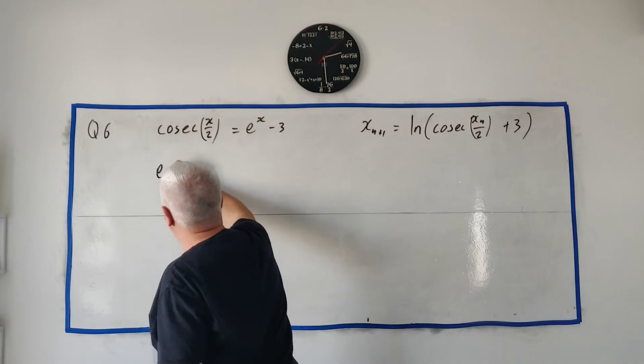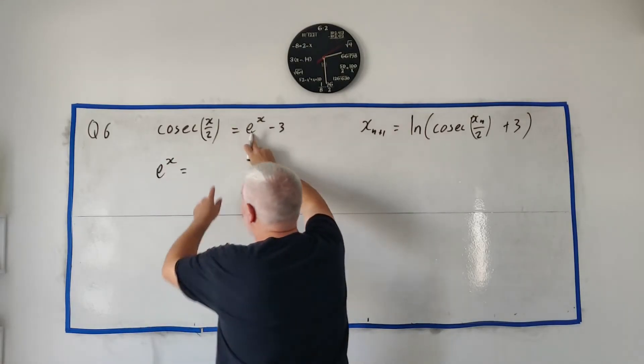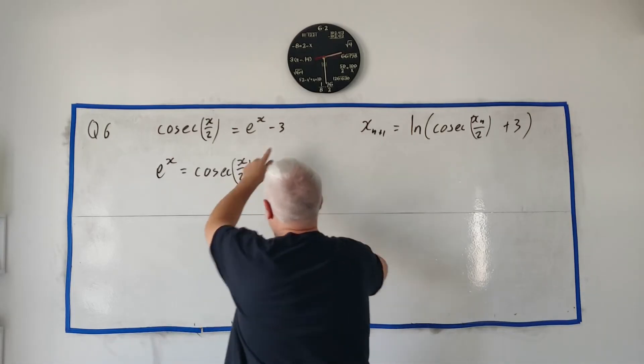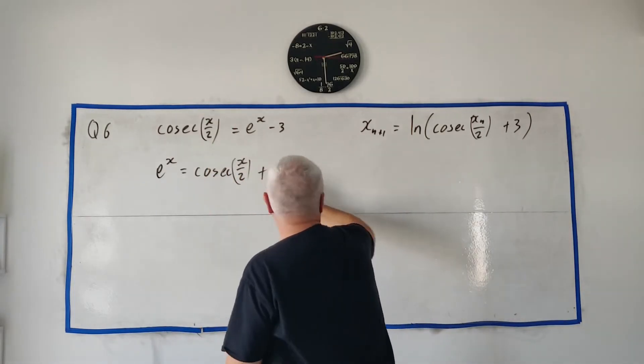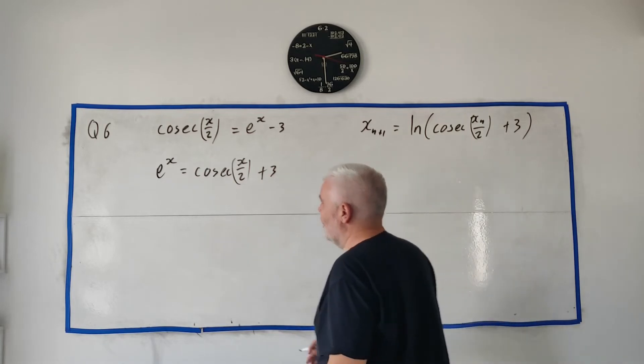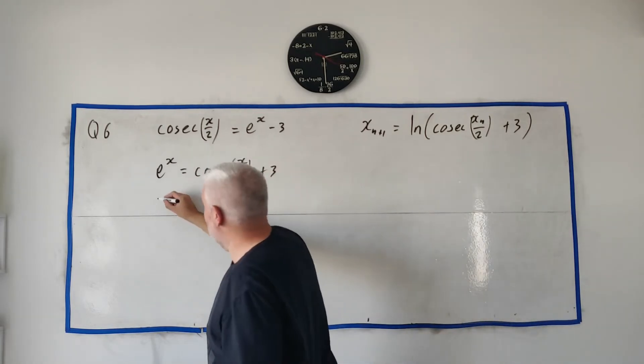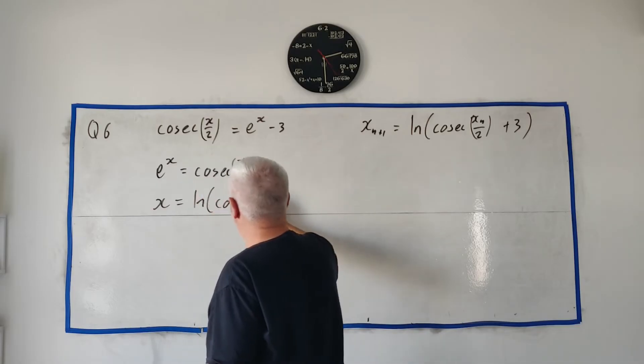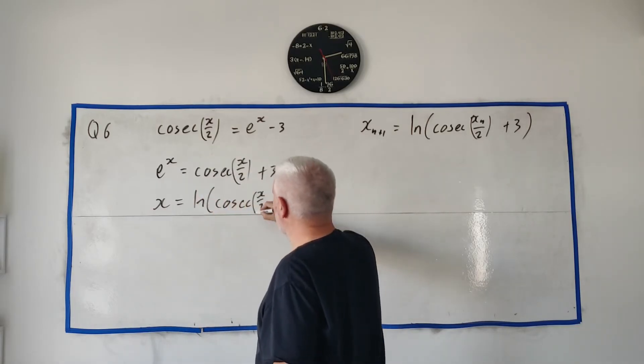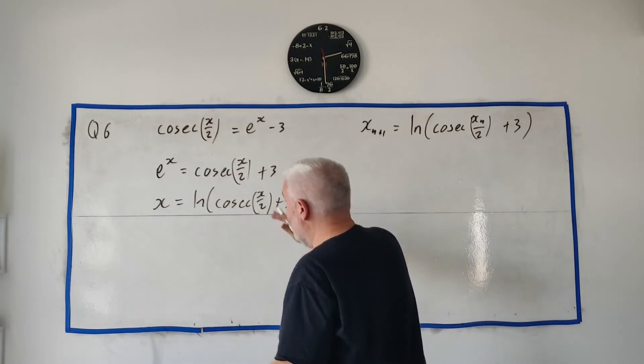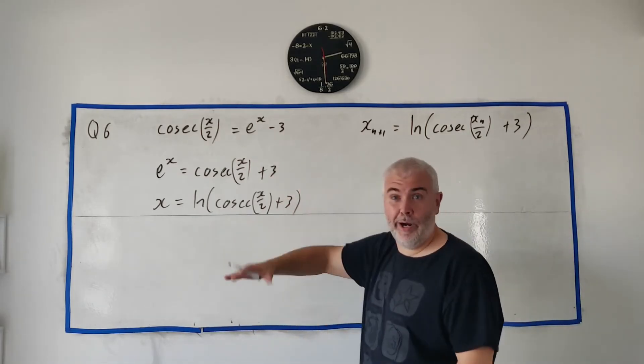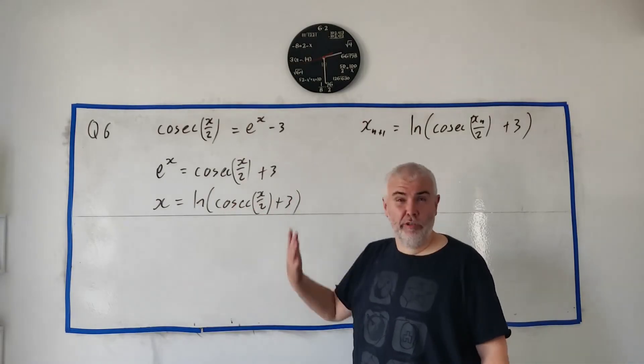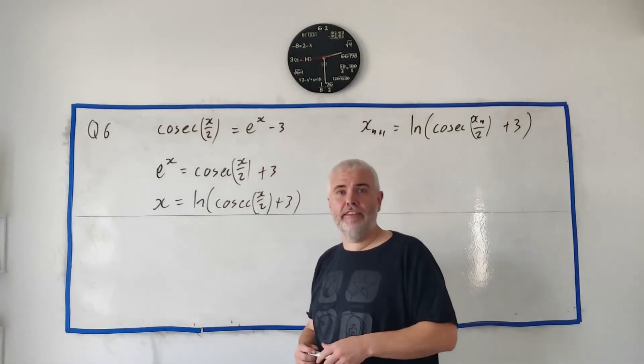Rearrange it here. So we have e to the x is equal this guy still, x over 2 and the 3 moves over plus 3. Already looking nearly identical. Take the natural log of both sides and we get x is equal natural log of cosec x over 2 plus 3. And that's it. That's it. It's only one mark. You're getting one mark from this. Really, they were just making sure you were able to do that before moving on to the next part.